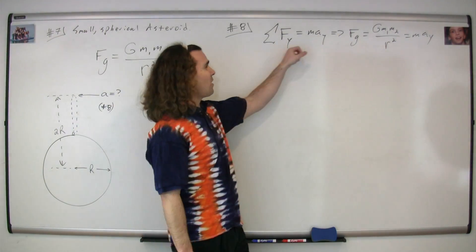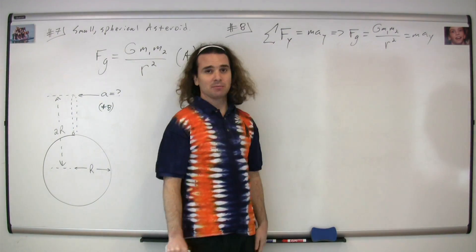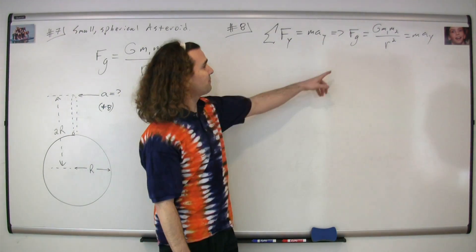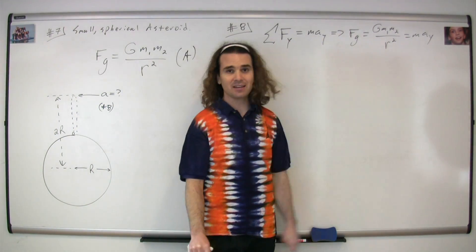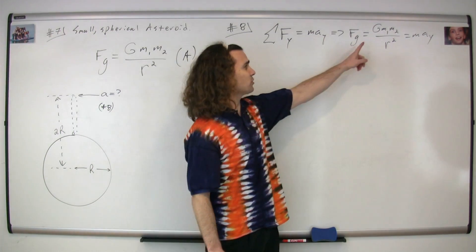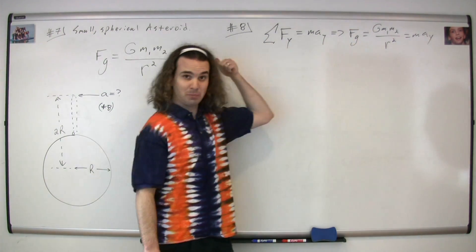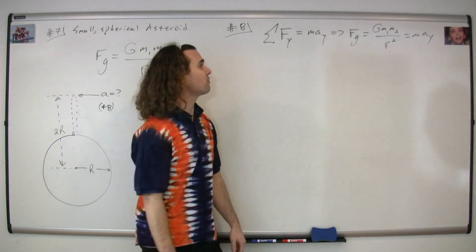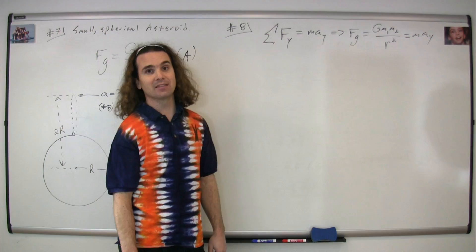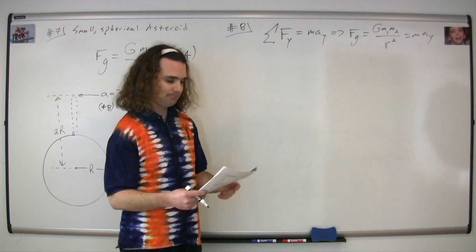The net force in the y direction equals the mass times the acceleration in the y direction. The only force acting on it is the force of gravity. Therefore, the force of gravity, which is big G·m₁·m₂ over r squared, is equal to the mass times the acceleration in the y direction.